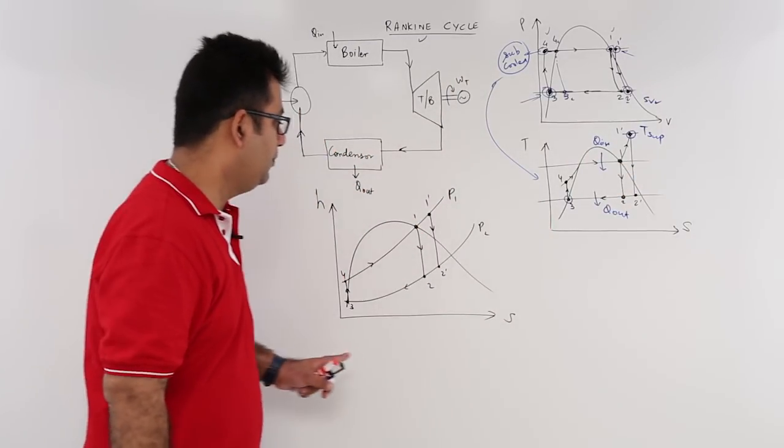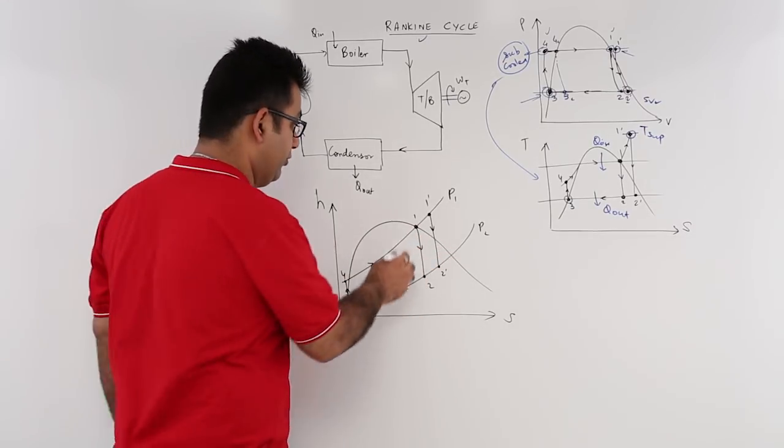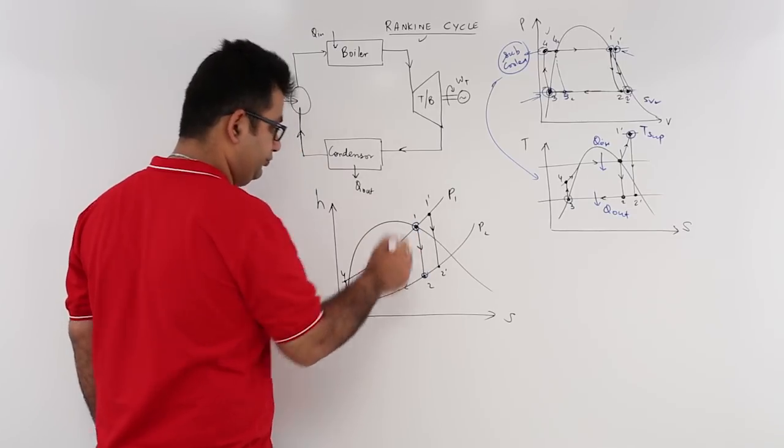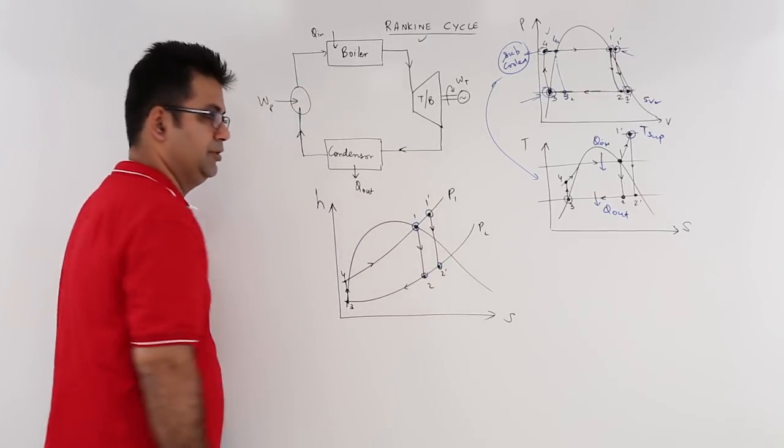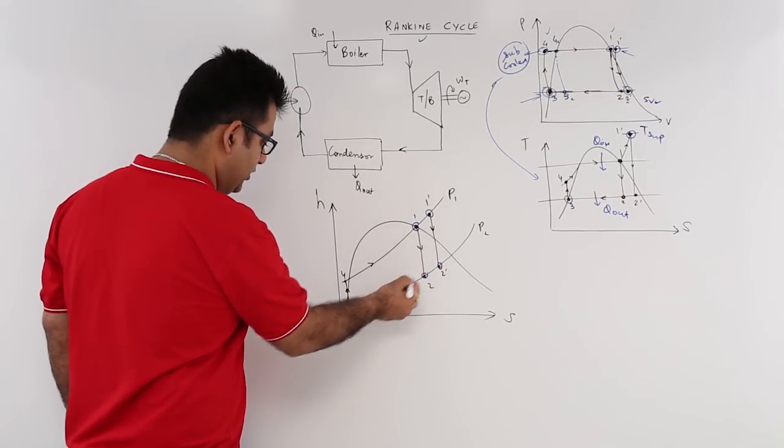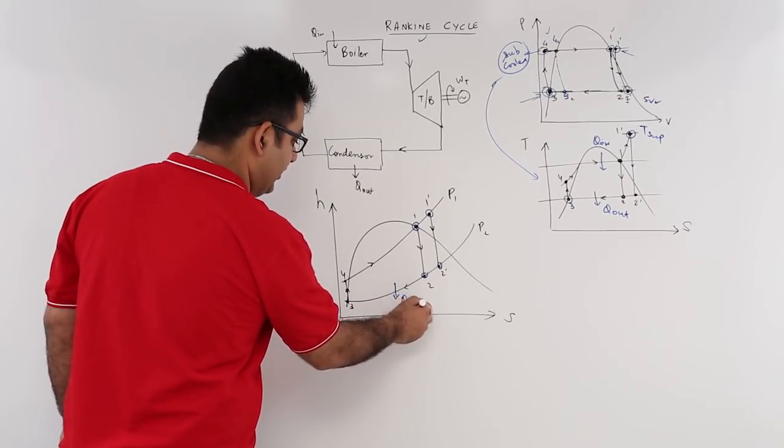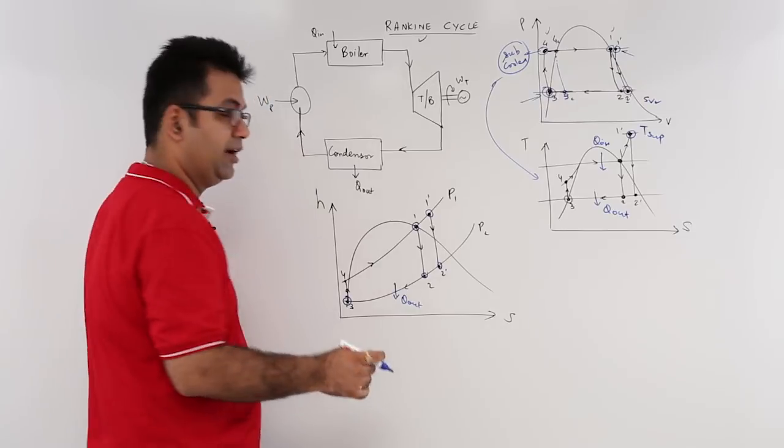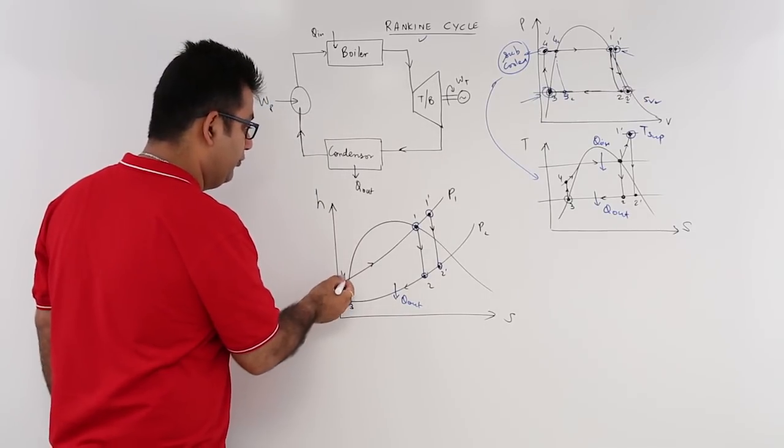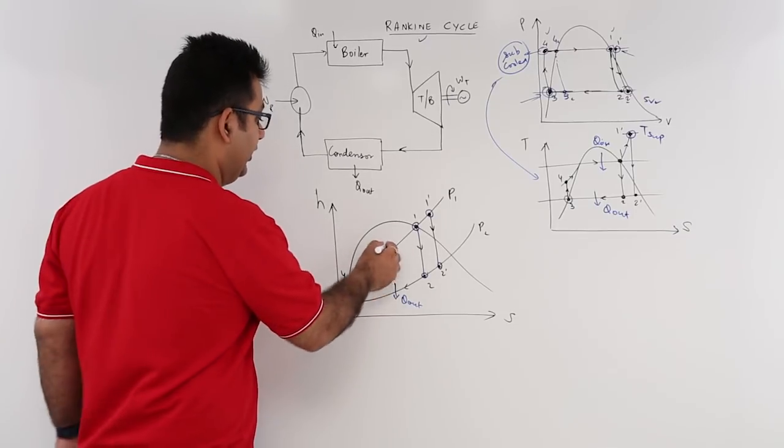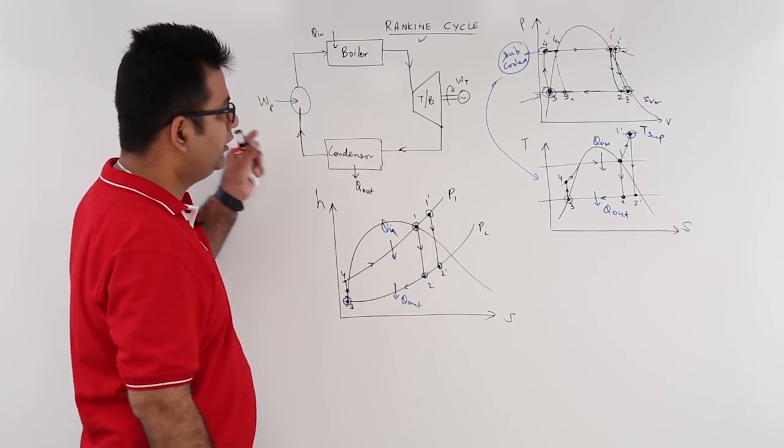Again bringing this onto the Mollier chart. In the Mollier chart you had the Carnot expansion from 1 to 2, but in this you have from 1 dash to 2 dash, and from 2 dash to 3, that is the heat rejection. So now you can very well see that you are converting the condensate into exactly saturated liquid, and then you pump it up to 4 and then you add heat into it.